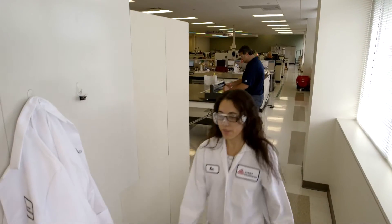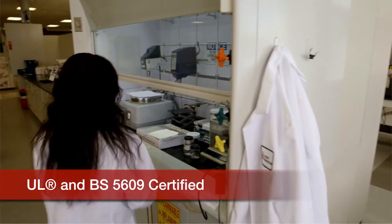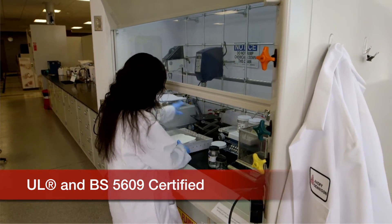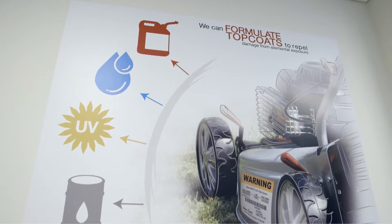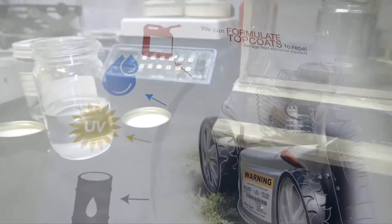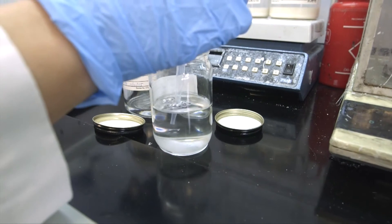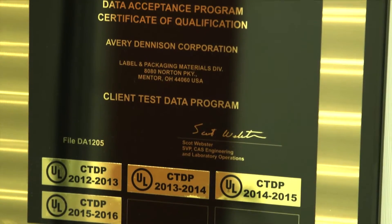With hundreds of patents in this area, our formulations lab helps us develop top coats and adhesives needed for specific applications. For example, lawn mower labels require UV and chemical resistance. It's in this lab we develop and test constructions required to meet UL labeling standards.